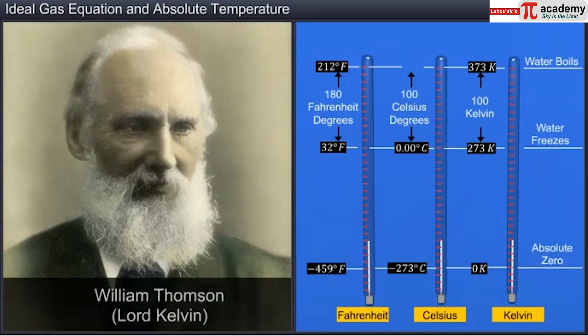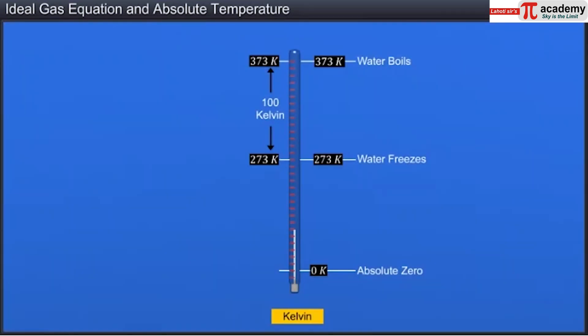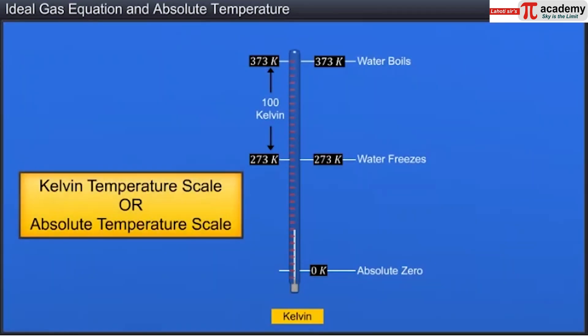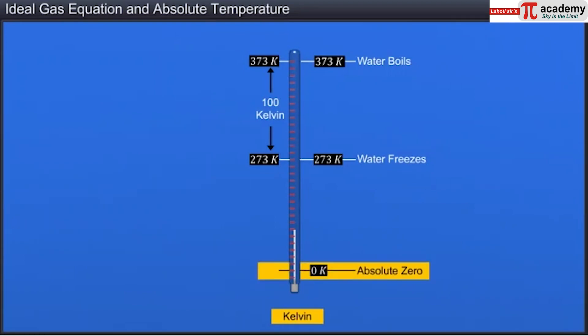A new temperature scale was developed by Lord Kelvin by designating this temperature of minus 273.15 degrees centigrade as zero. This new temperature scale is known as the Kelvin or absolute temperature scale. The zero of this scale is called absolute zero.